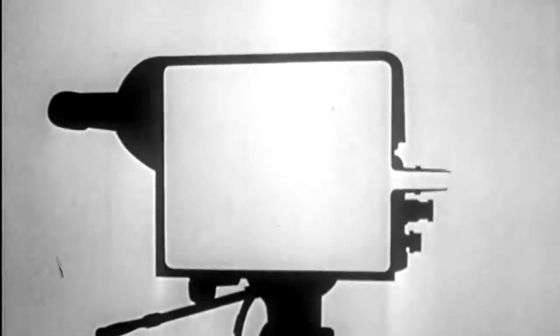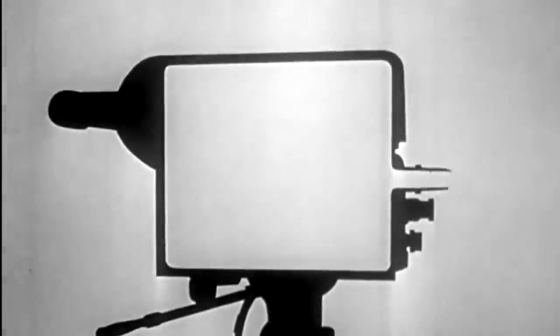In the beginning, there was black and white television. To understand how that worked, let's start with the camera. Back in the 1940s, the television camera made pictures using a camera tube.